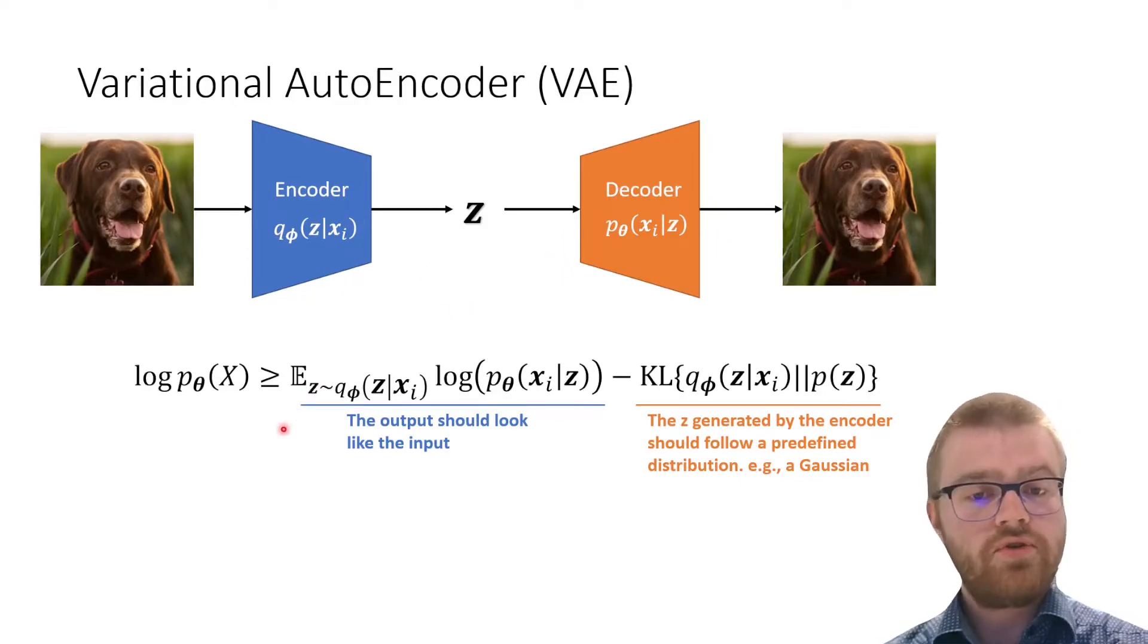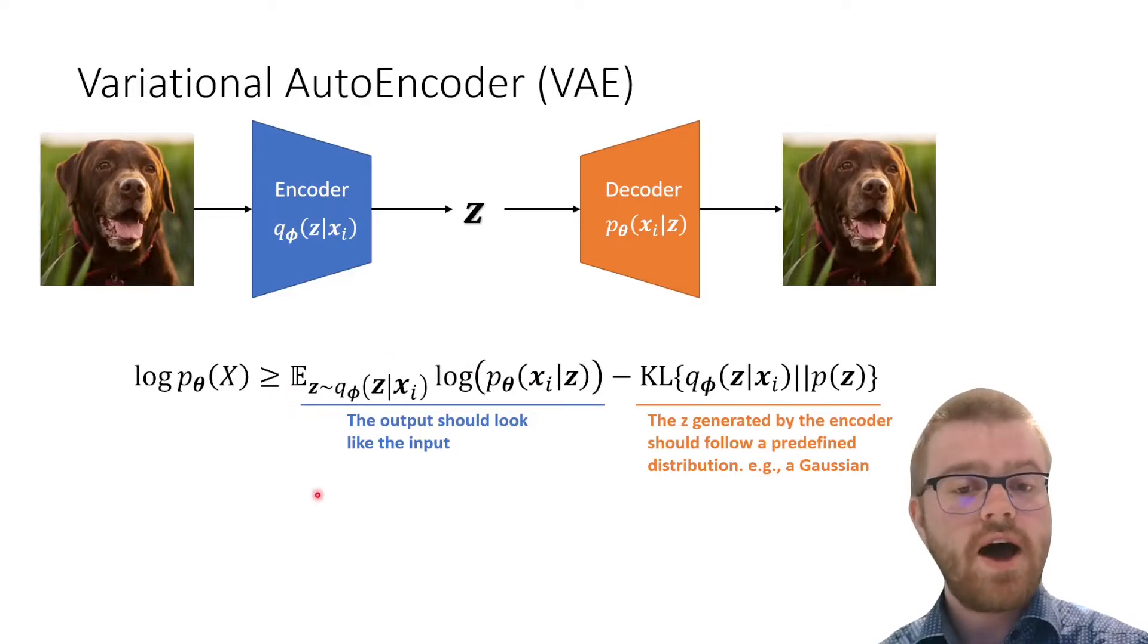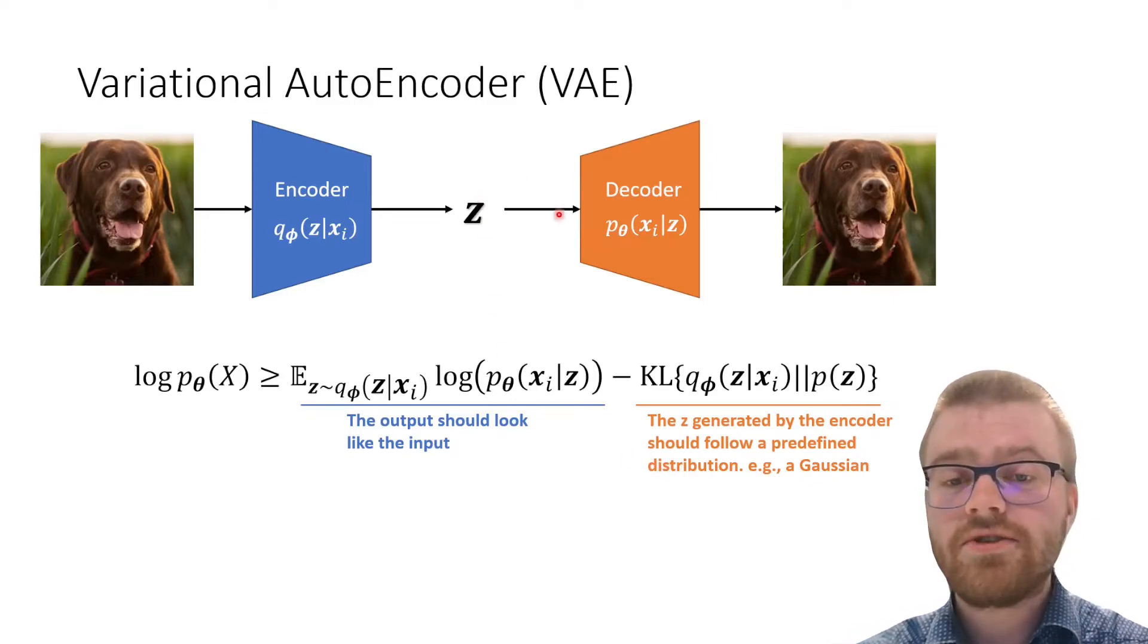We've got two terms. The left one says the output should look like the input, and the second term says these latent codes z should actually follow our predefined distribution, for example a Gaussian.